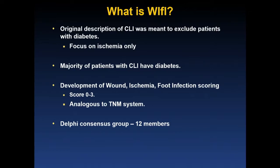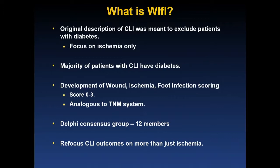This was developed using a Delphi consensus group of 12 members, where different potential combinations of wound size, severity of ischemia, and extent of foot infection were used to create a perceived risk categorization among patients with critical limb ischemia — not unlike how AUC criteria are developed. Importantly, this has helped refocus CLI outcomes on more than just ischemia.